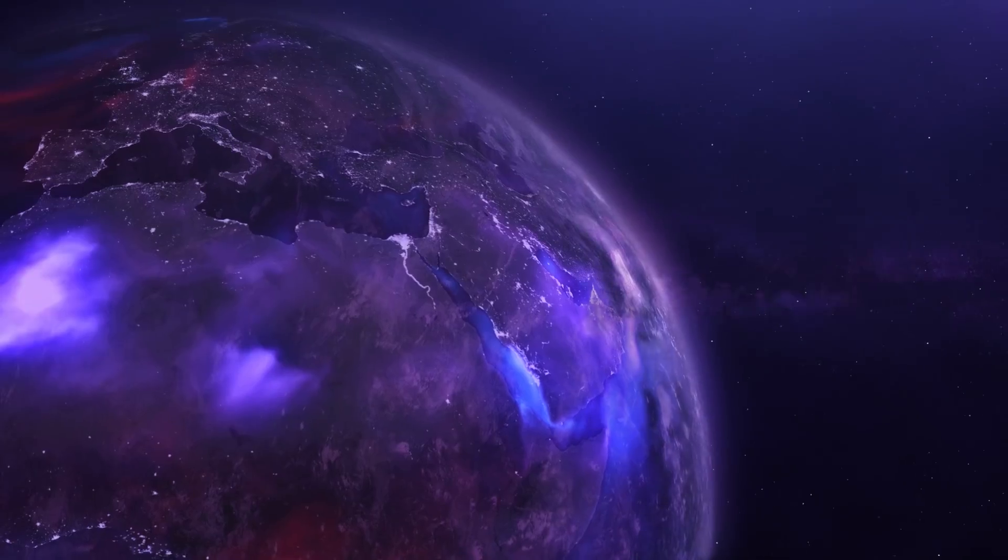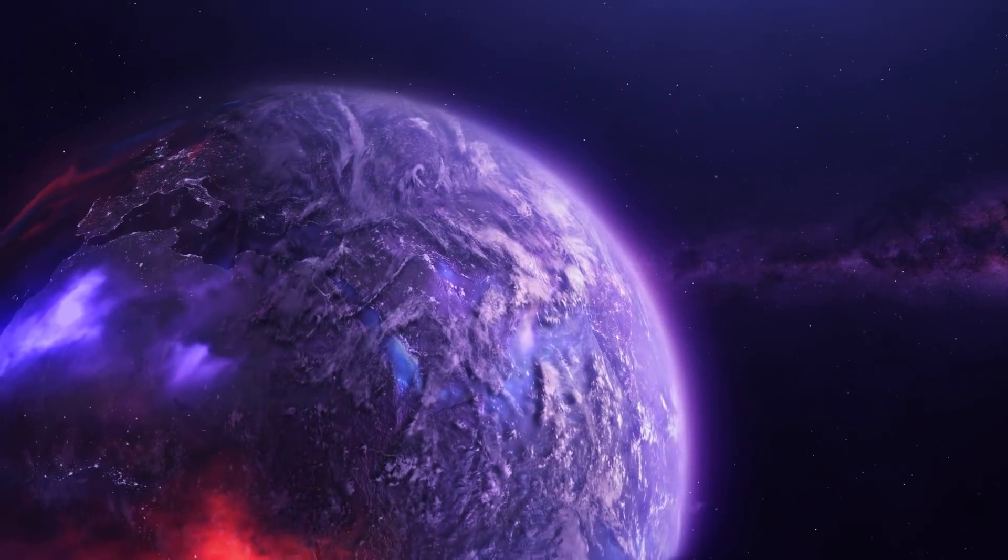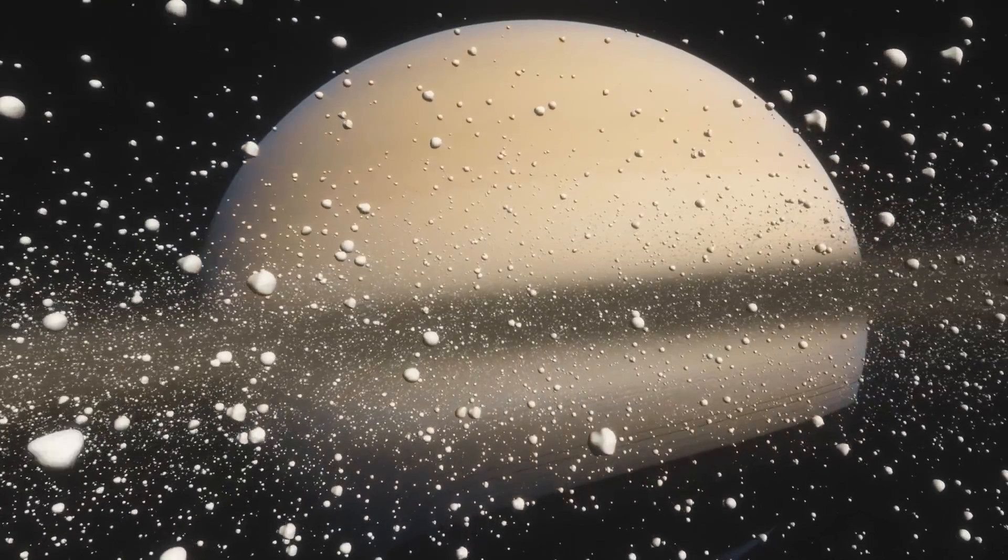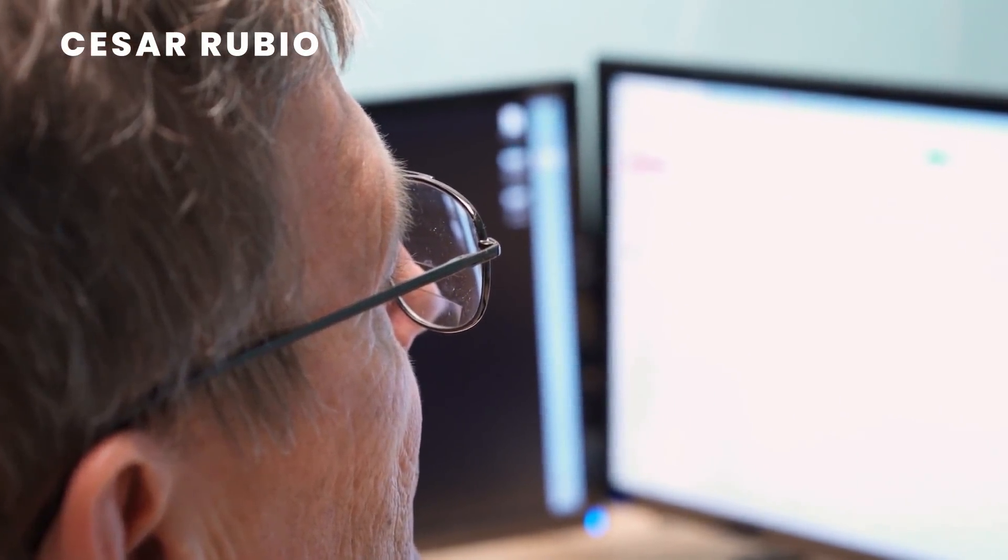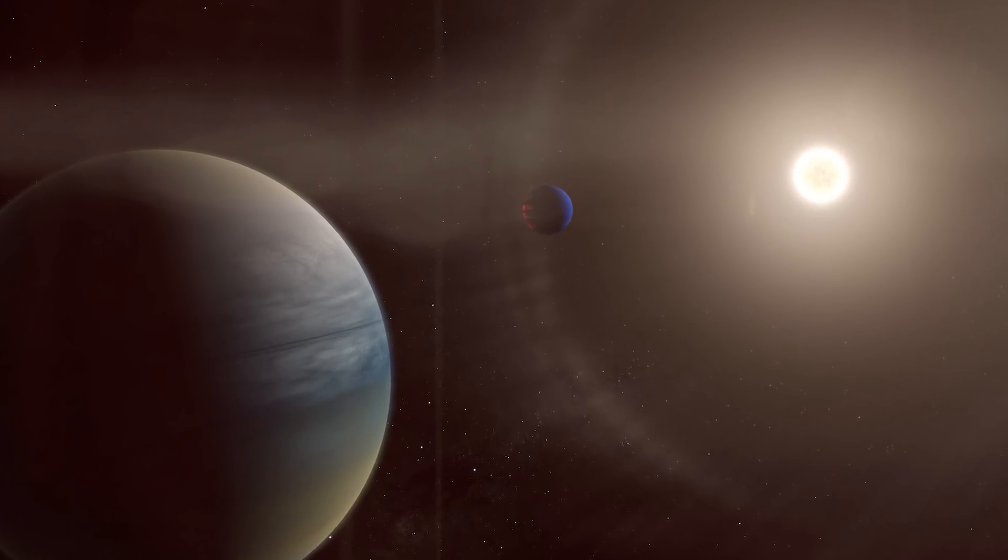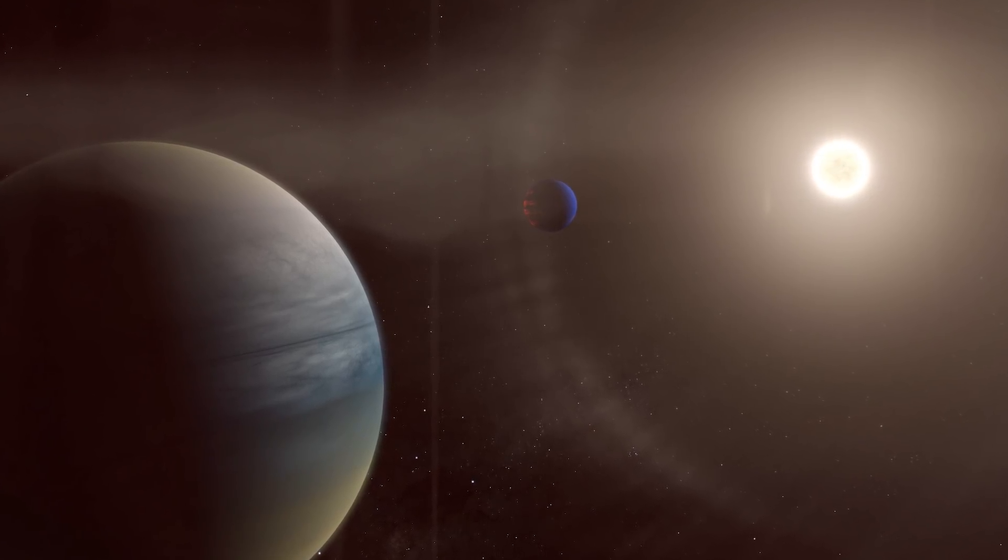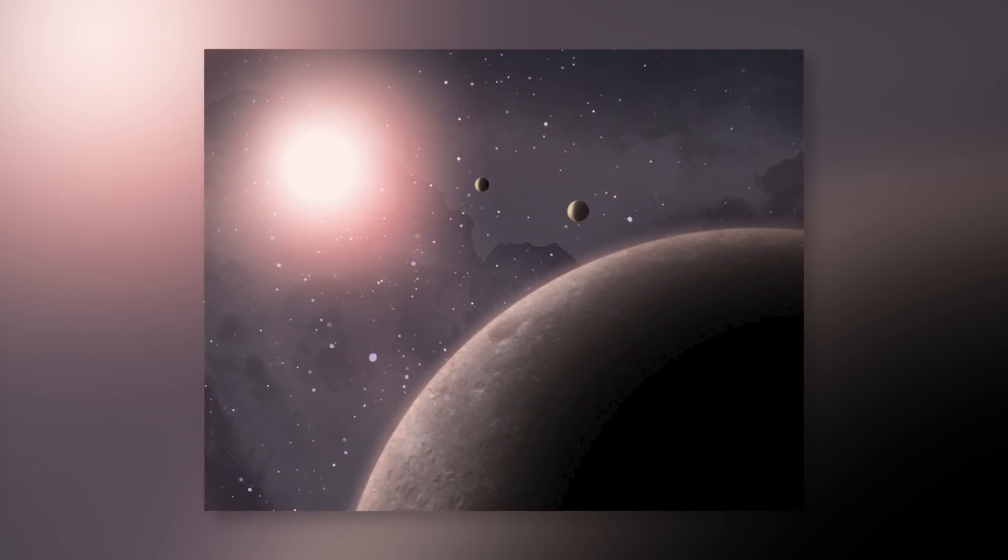And by the way, you don't just need to be a NASA scientist to find an exoplanet either. Just recently, in June 2021, a citizen scientist named Caesar Rubio discovered not one but two gas planets that orbit around a bright sun-like star as part of a project that NASA has called Planet Hunters TESS.